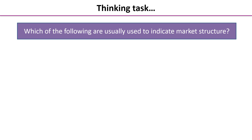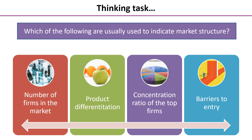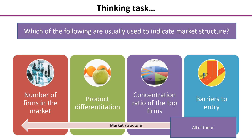We're going to start with a thinking task for you. Which of the following are usually used to indicate market structure? The number of firms in a market, product differentiation, concentration ratio, and barriers to entry. Pause the video for a few moments if you need to. Well, the answer of course is usually it's all of these.